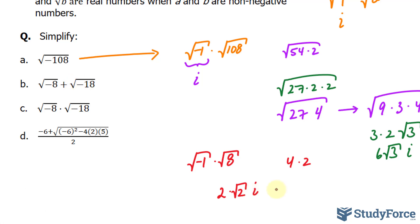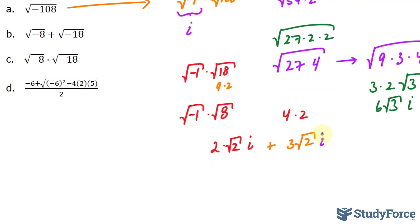For this, it's the same thing. We break it down as negative 1 times the square root of 18. 18 is 9 times 2. 9 being a perfect square becomes 3. So we have 3, the square root of 2, and also i.